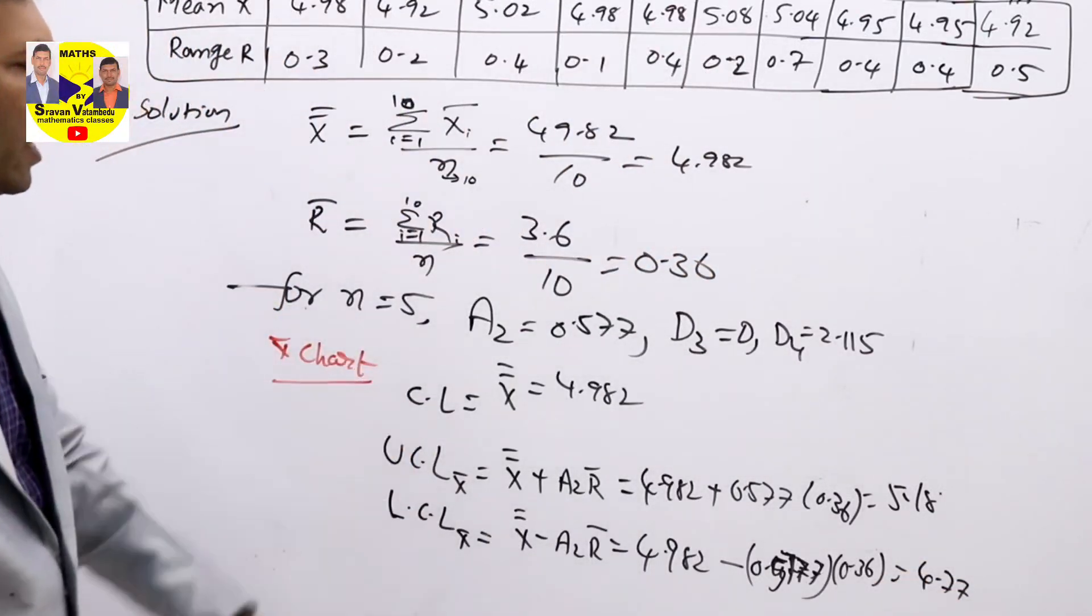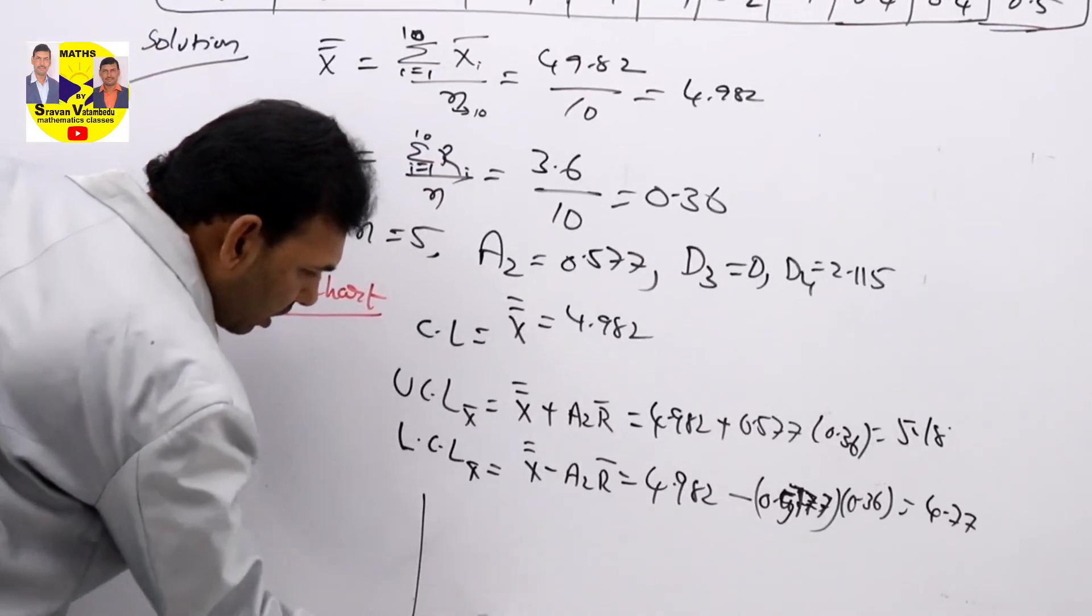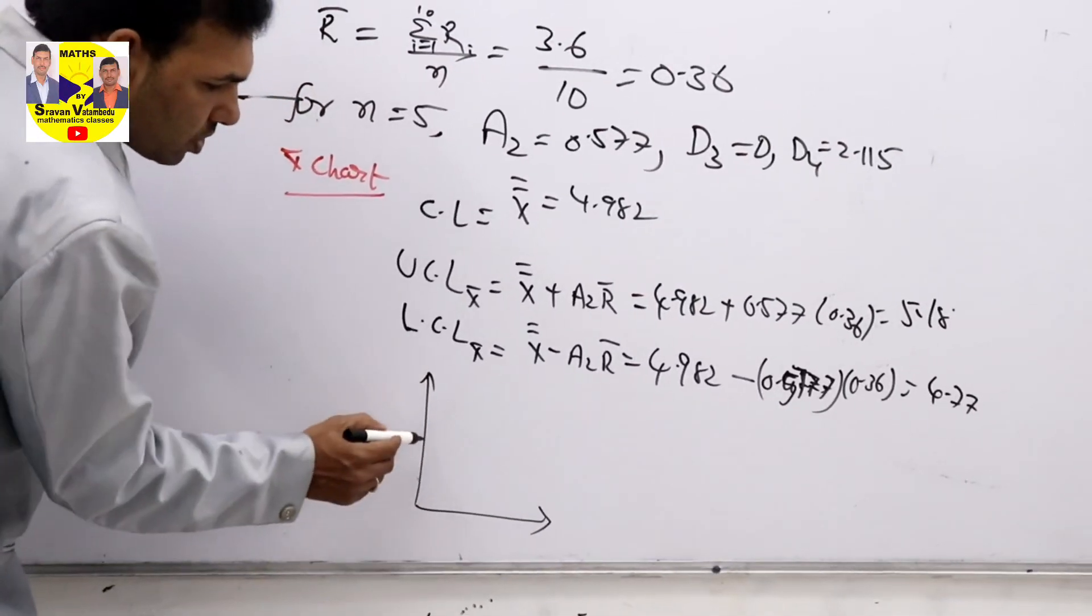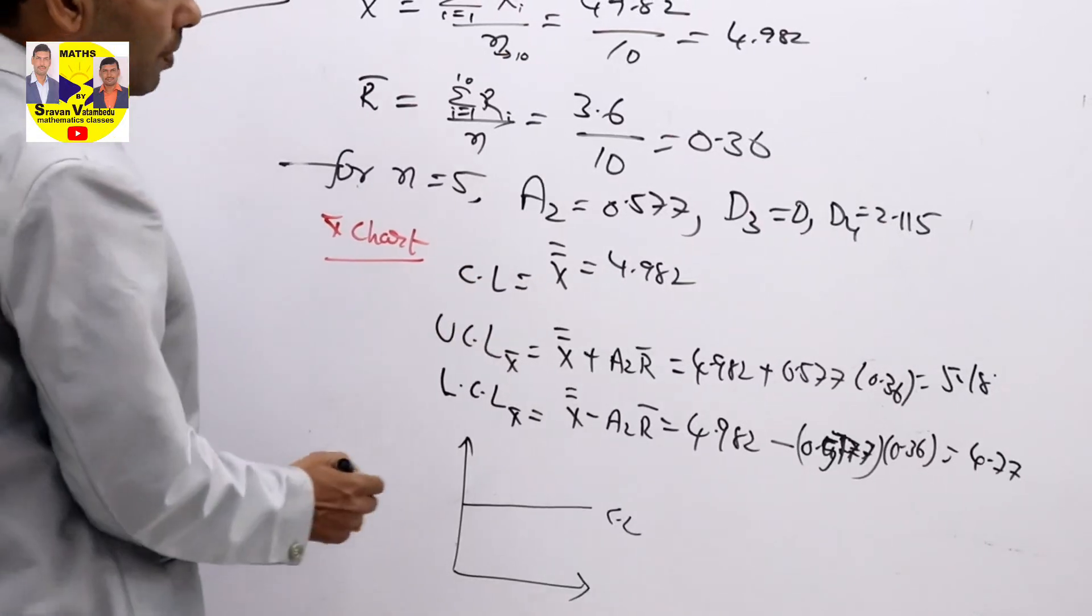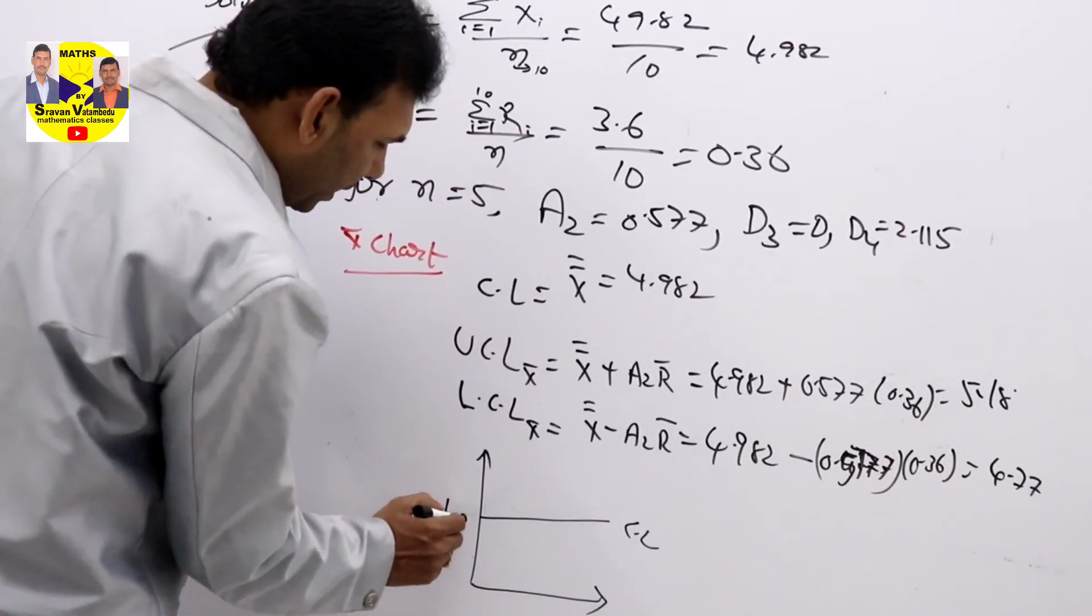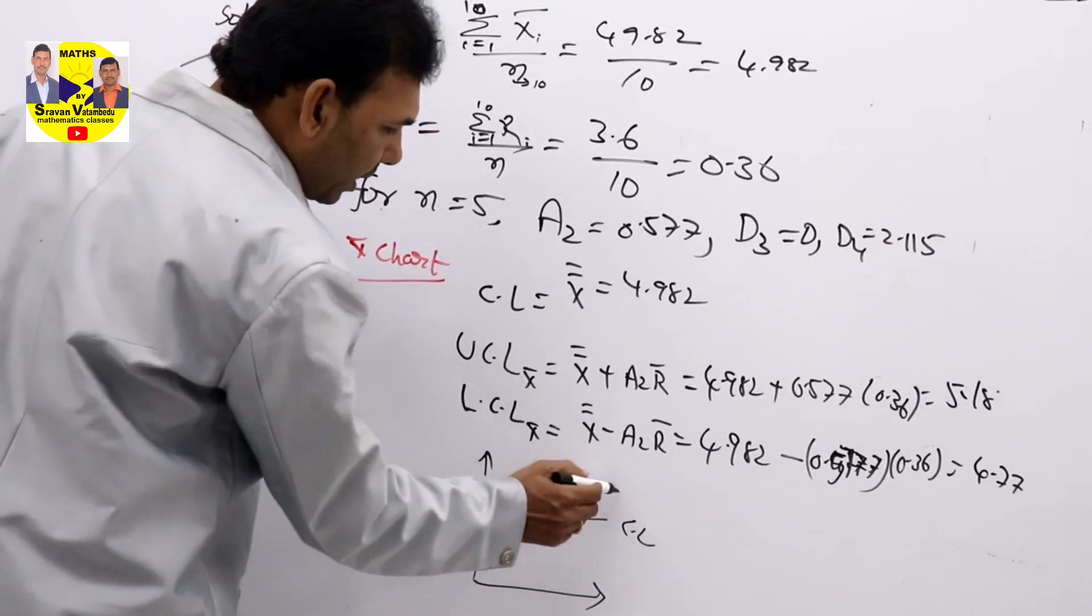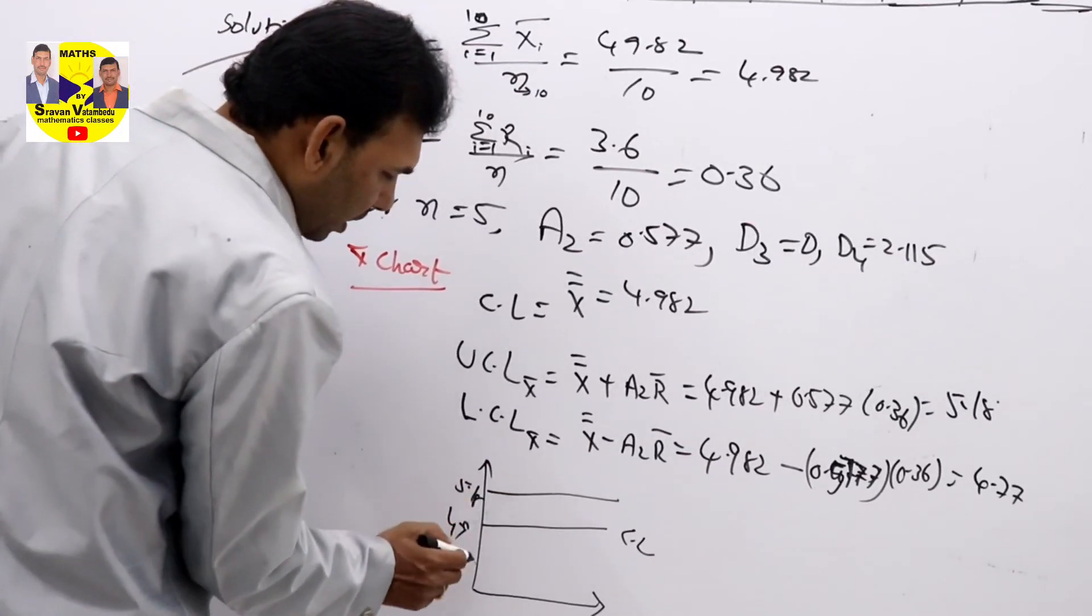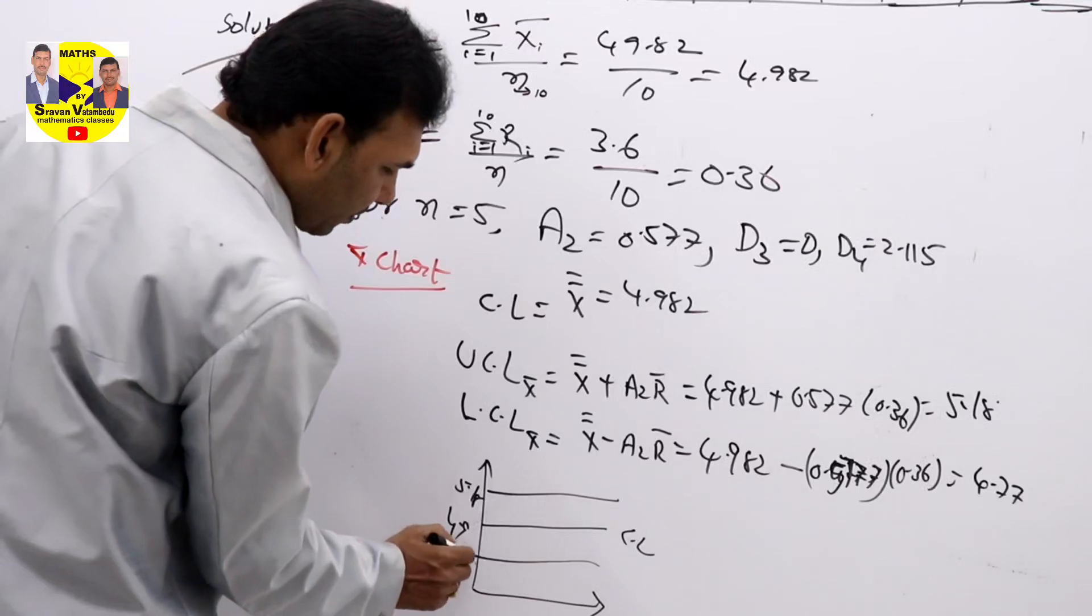Now, the control line you will get—if you see the rough diagram of X bar chart, control line will be here approximately at 4.9, and upper control line you will have at 5.18, and lower control line you will have at 4.77.